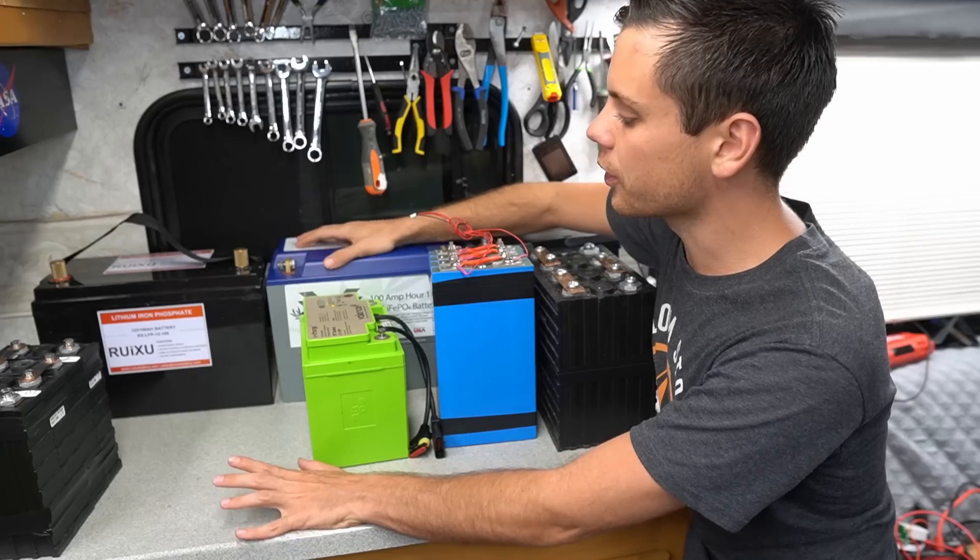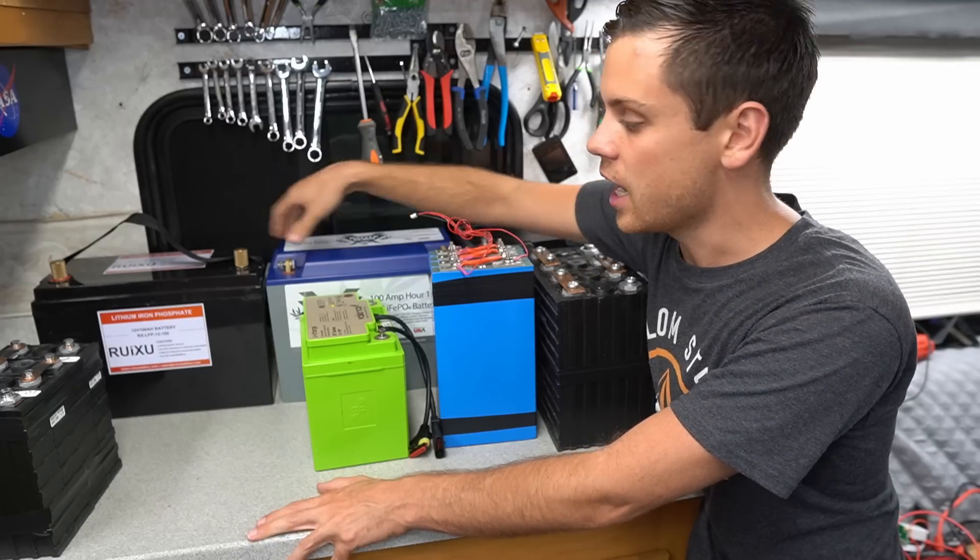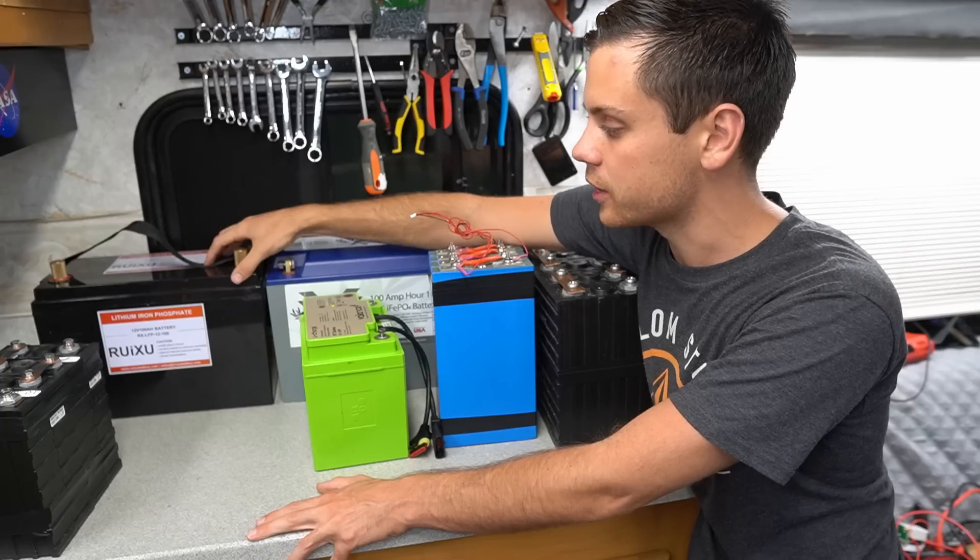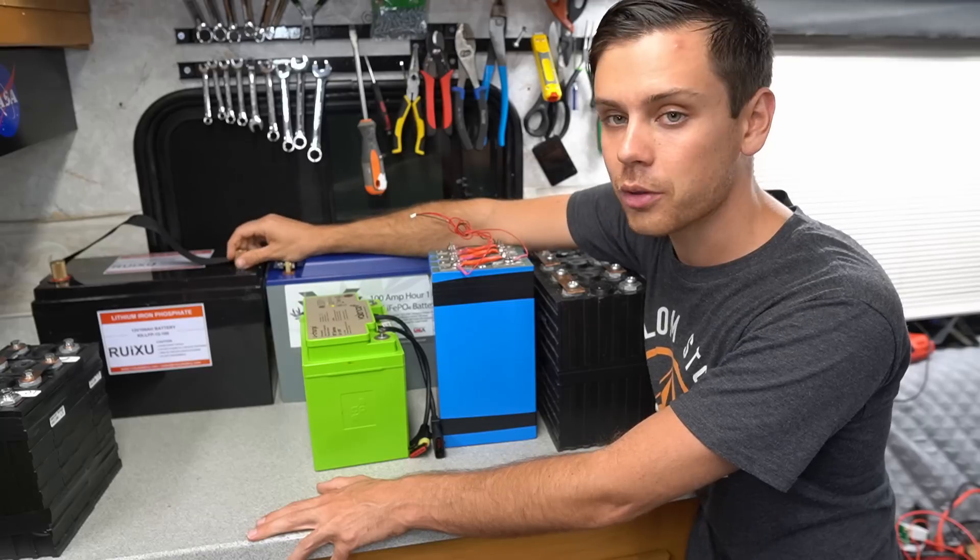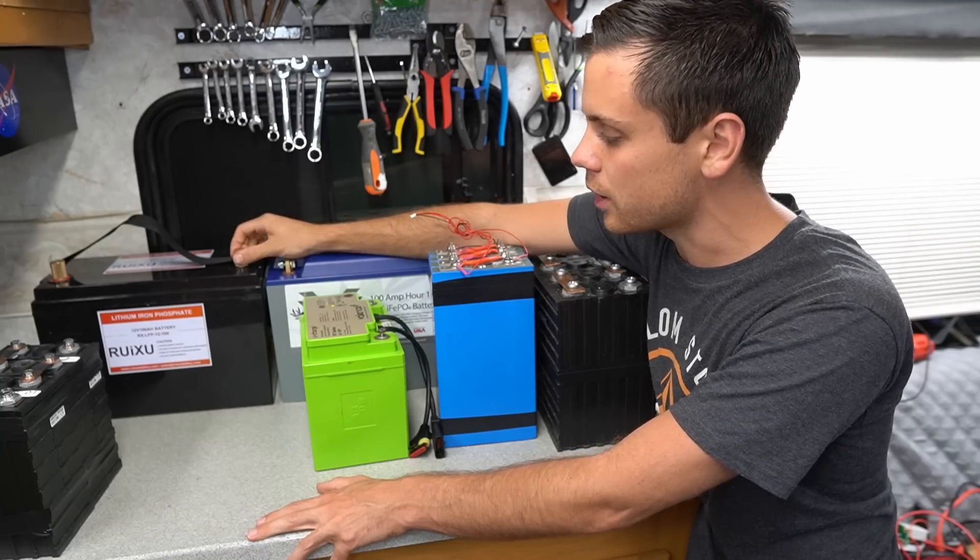So I know Battle Born is the good one and they have low temp cutoff and Ruxu doesn't. So you have to buy a solar charge controller with low temperature cutoff. But the Battle Born and the Ruxu are both really good options depending on what your budget's like.